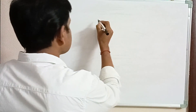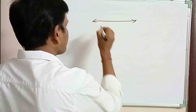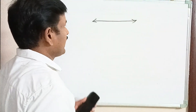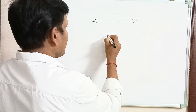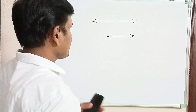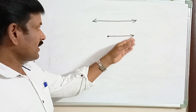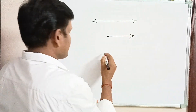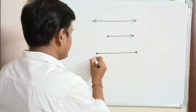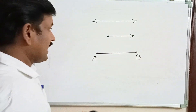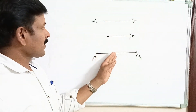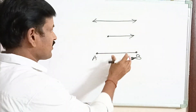Hi friends, welcome to our channel. This is Pasha. In our day-to-day life you might have come across the word line. A line is a collection of points in a straight path that extends endlessly in both directions. A ray is a part of a line — it has one endpoint and extends endlessly on the other side. A straight part between two points is called a line segment; it is a part of a line or a ray and has a definite, measurable length.